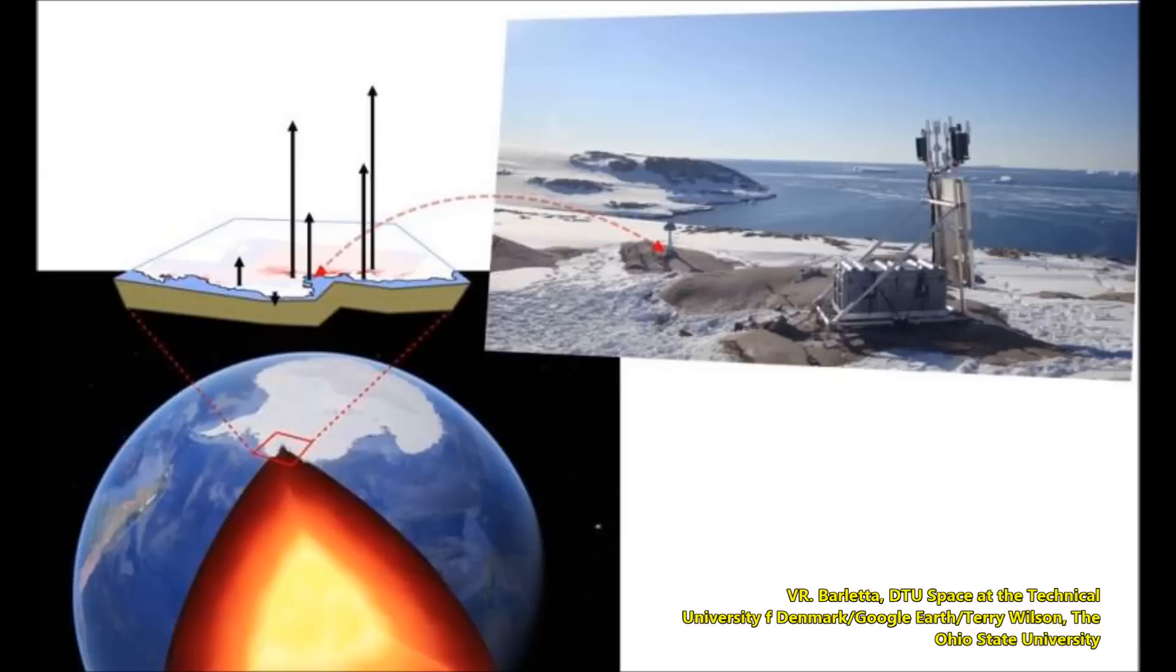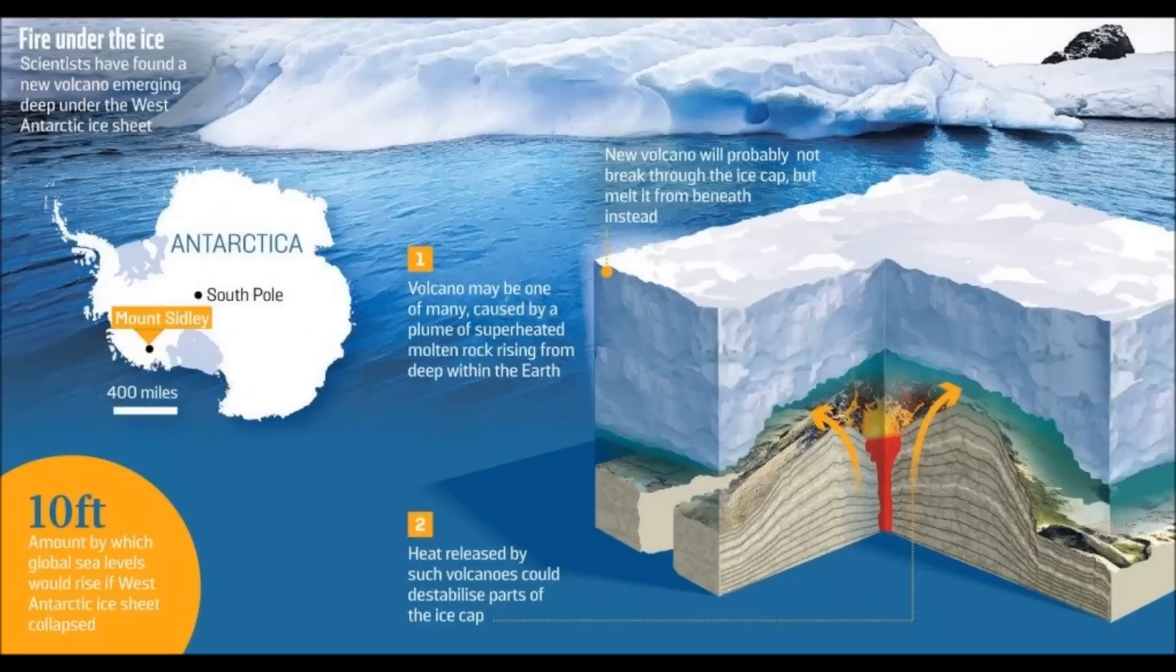The process seemed unstoppable, Wilson said. But we found feedbacks that could slow or even stop the process. One important feedback involves pinning points—elevated features of the earth rise from the surface below the grounding line that pin the ice sheet to solid earth. These pinning points are going up in response to the uplift of the earth and could prevent further retreat of the ice sheet.